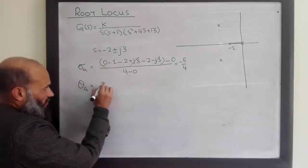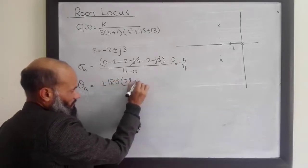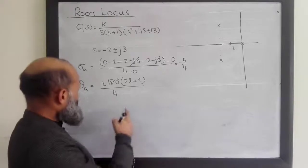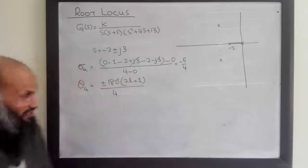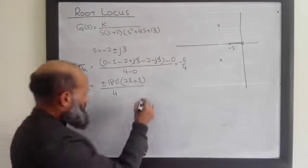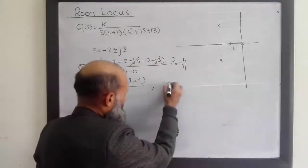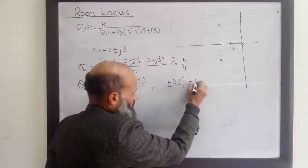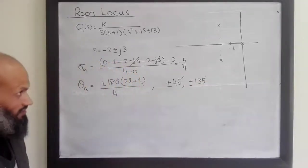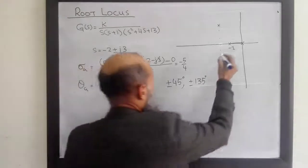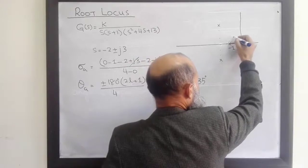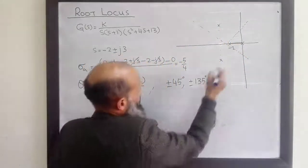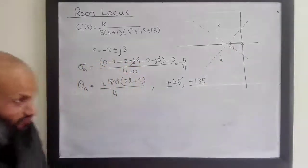The angles of the asymptotic lines are given by ±180(2L+1) divided by the number of finite poles minus the number of finite zeros. Substituting L = 0, we get 180/4 = 45°, giving ±45°. Substituting L = 1 gives ±135°. So there are four asymptotic lines at ±45° and ±135°.